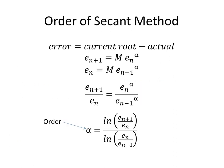Now let's talk about the order of the Secant method, like we have in other videos. Here, the order alpha is equal to the natural log of an error ratio divided by the natural log of another error ratio.